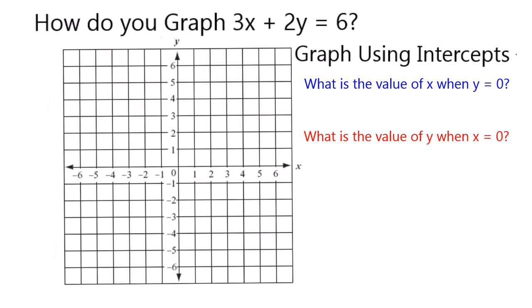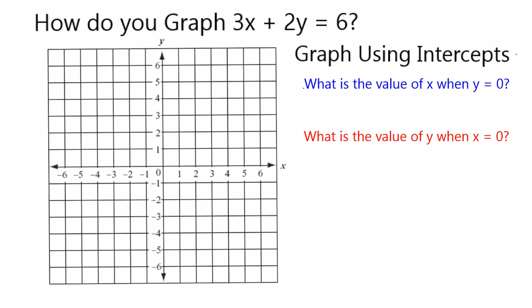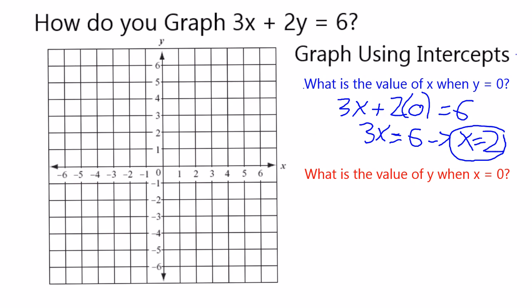When y equals 0, we're going to have 3 times x plus 2 times 0, which of course just goes away, equals 6. In other words, 3x itself equals 6. If 3x equals 6, then x itself has to be 2.